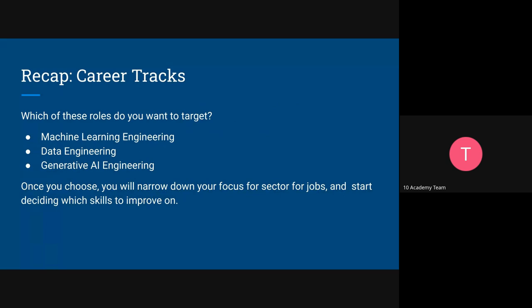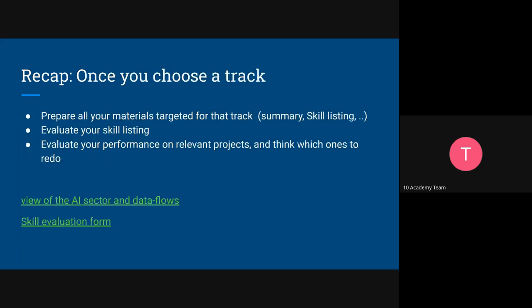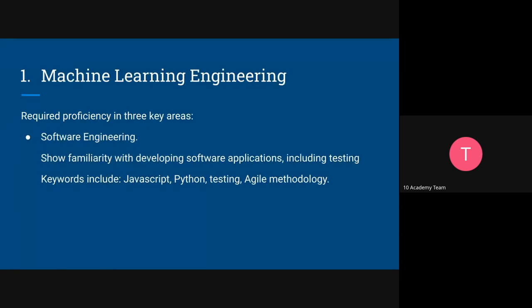As a recap, you have three tracks to choose from: machine learning engineering, generative AI engineering, and data engineering. We want you to choose so that you can focus on that track when applying for jobs, preparing your materials, and going forward improving the skills you need to land a job. These tracks overlap a lot since they share a lot in common.